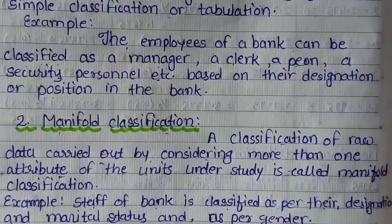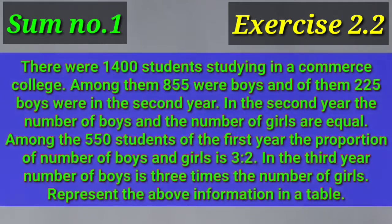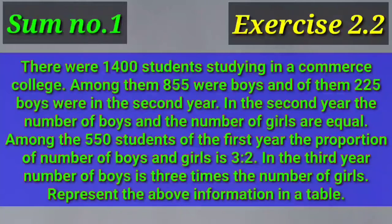तो हम exercise 2.2 में जो sums दिये गए हैं वो one by one solve करेंगे. So friends, exercise 2.2 sum number 1: There were 1400 students studying in a commerce college. Among them 855 were boys. And of them 225 boys were in the second year. In the second year the number of boys and the number of girls are equal. Among the 550 students of the first year, the proportion of number of boys and girls is 3 to 2. In the third year, number of boys is 3 times the number of girls. Represent the above information in a table.